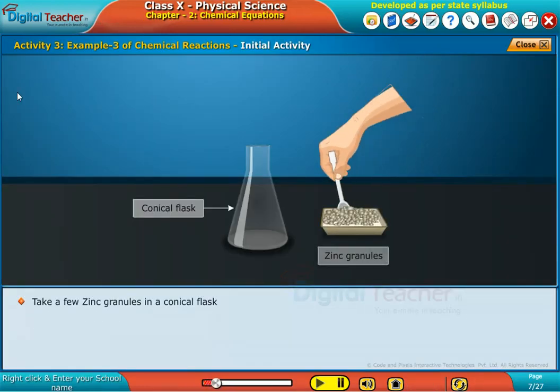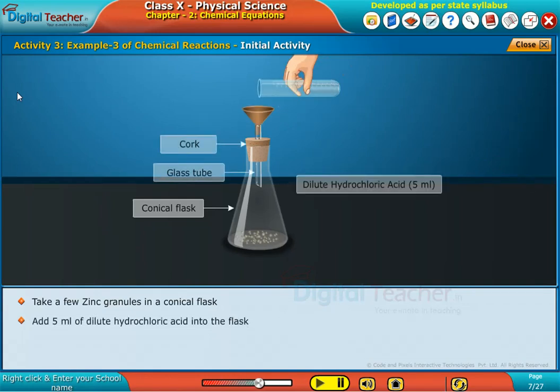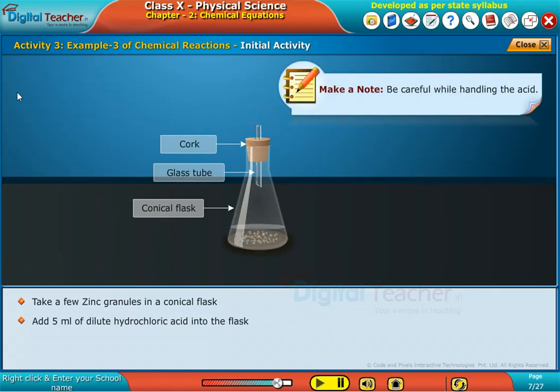Take a few zinc granules in a conical flask. Add 5 ml of dilute hydrochloric acid into the flask. Make a note, be careful while handling the acid.